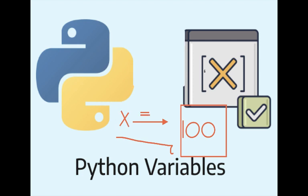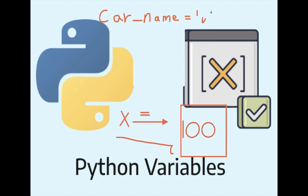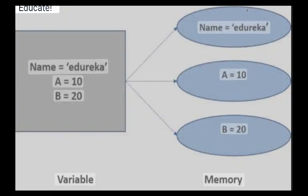You can make another variable — let's write 'car_name'. We'll add a few values to this variable. Value one uses single quotes: 'Volvo'. Then we add a comma, followed by 'BMW', then another comma and 'Kia'.